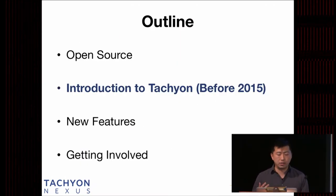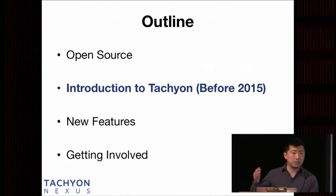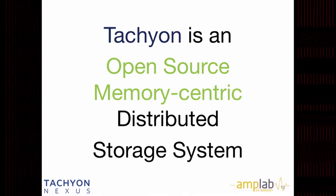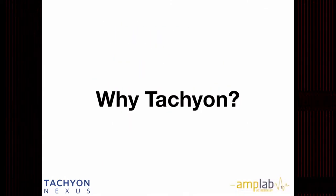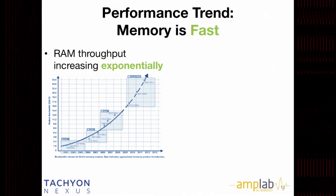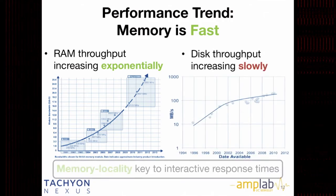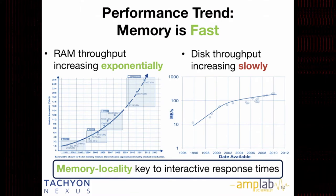Now I'll give a brief introduction to Tachyon — what it was like before 2015. Tachyon is an open-source memory-centric distributed storage system. Why build a new storage system? There are two main reasons. First, performance: memory is fast, and DRAM throughput still increases exponentially every year, while disk throughput increases slowly. This means memory locality is the key to achieving interactive response times.